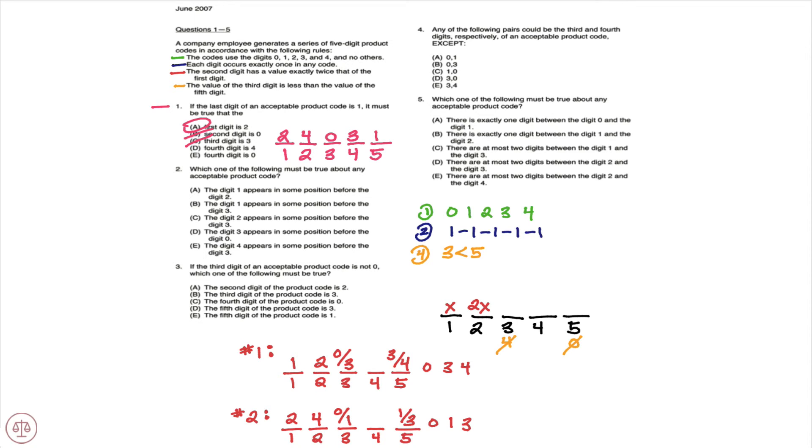D, the fourth digit is 4, again the fourth digit is 3 so D does not follow. E, the fourth digit is 0, again we know that the fourth digit is 3 so E is not necessarily true so A would be the correct answer.